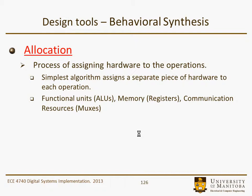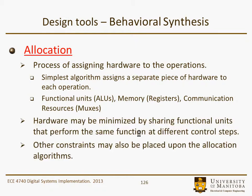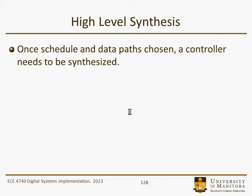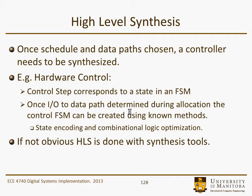The process of assigning hardware to operations — the simplest algorithm would be to unroll everything and apply a separate piece of hardware to each operation, but that wouldn't be very efficient. You also have to consider other constraints on the allocation algorithm, such as timing. In the allocation step, we determine that we need an addition, a multiplication, a shift, a division, and so on. Once the schedule and data paths are chosen, a controller needs to be synthesized — typically hardware control — where the control step corresponds to a state in a finite state machine, created using known FSM methods.